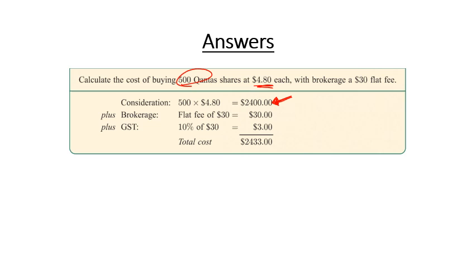But it says we've got a broker fee of $30 flat. So we can just add in our $30. We don't need to work out a percentage for this one because it doesn't give us a percentage. It just says $30 flat fee.